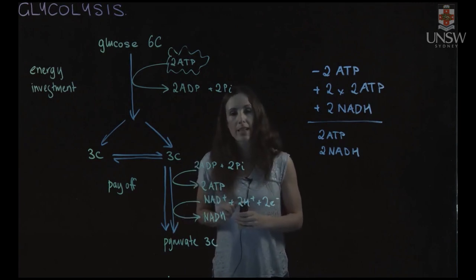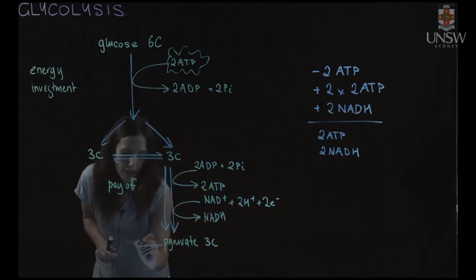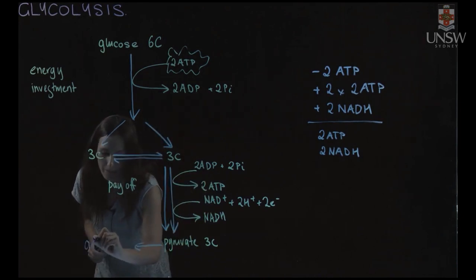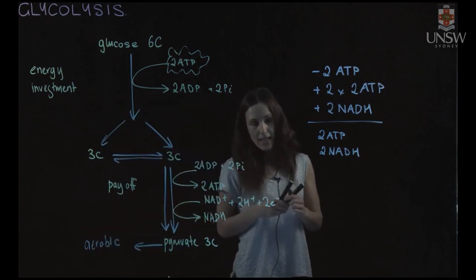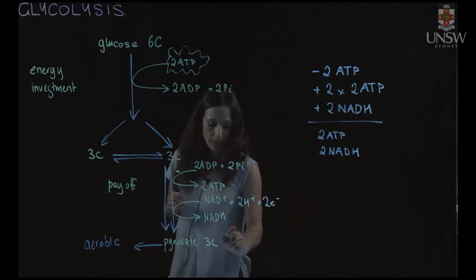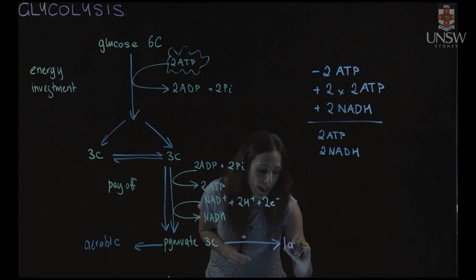Pyruvate has other fates. It can be further oxidized by aerobic metabolism. So it can enter, goes on to be further oxidized in the TCA cycle. Or anaerobically, so in anaerobic conditions it goes to lactate.